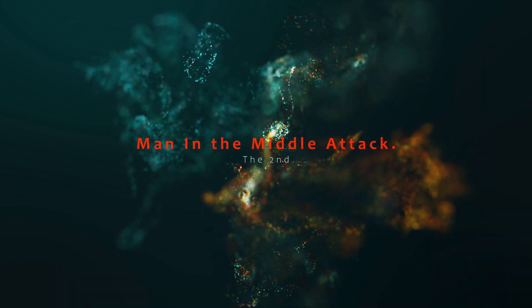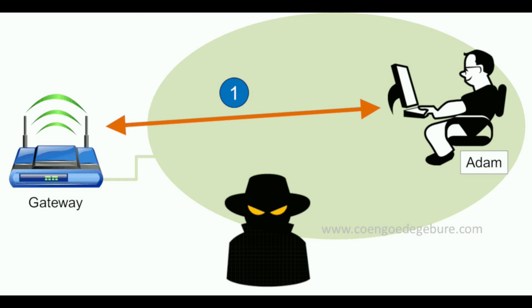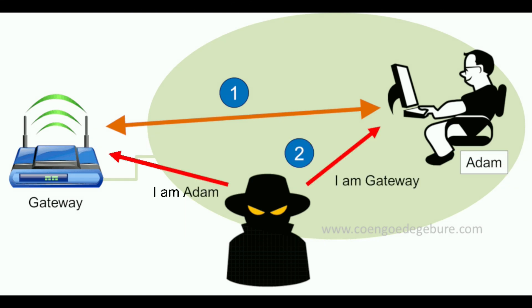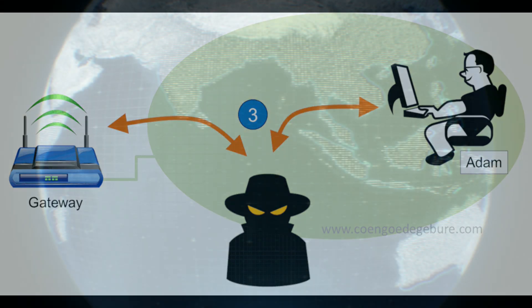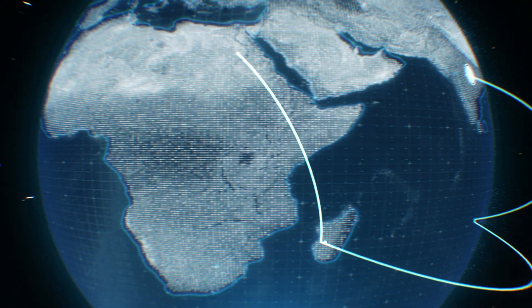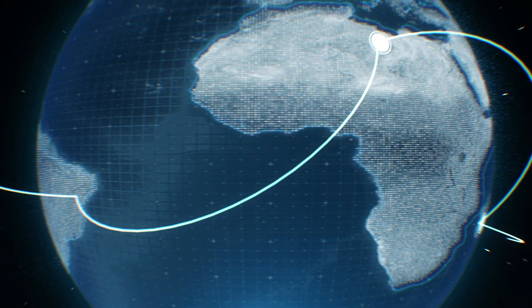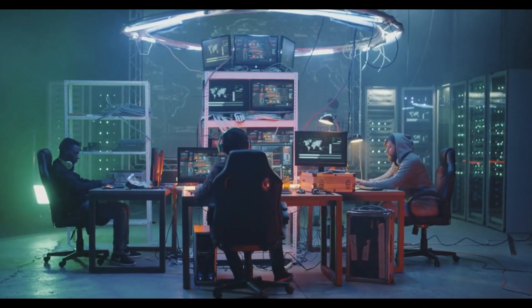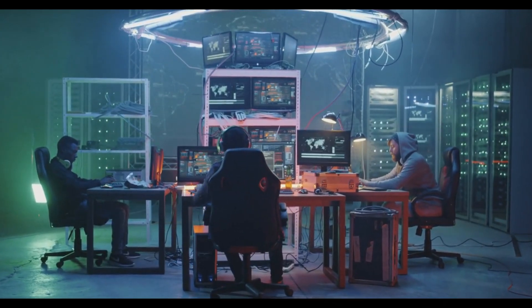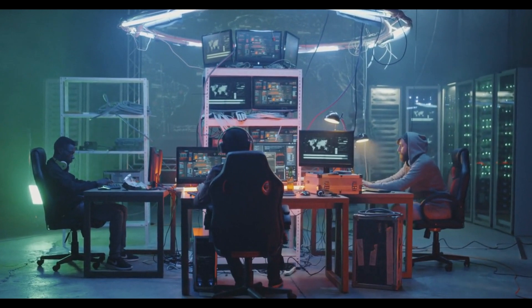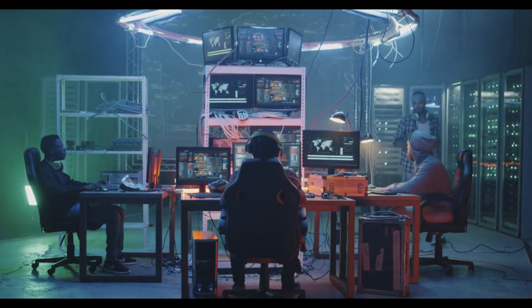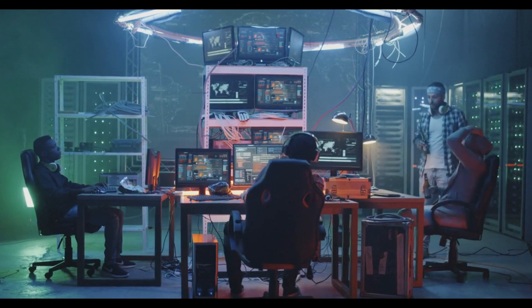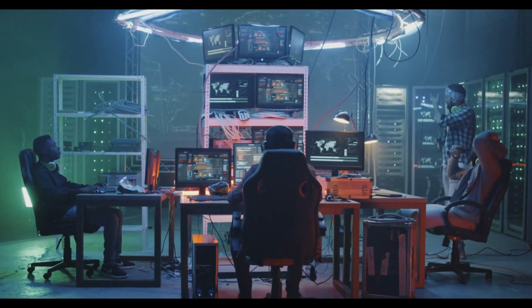The second is the man-in-the-middle attack. This type of attack occurs when a hacker privately steals and alters the communication between the sender and receiver. A user may think they are communicating with a legitimate user, but all the conversation is passing through the hacker, who can alter it without their knowledge. Burp Suite is a commonly used tool by hackers to perform a man-in-the-middle attack, intercepting requests between the machine and the server.